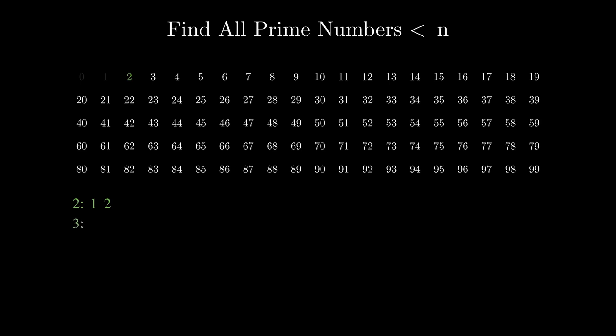Then move to 3, check if it has any divisors other than 1 and 3 itself, no, therefore it's also prime. Then move to 4, check if it has any divisors other than 1 and 4 itself, yes, it's divisible by 2, therefore it's not a prime number, and so on.